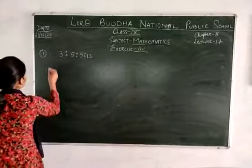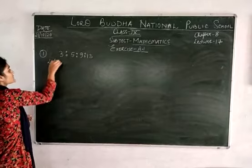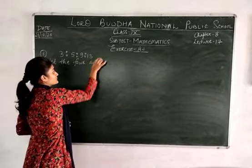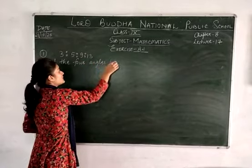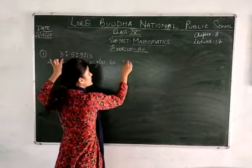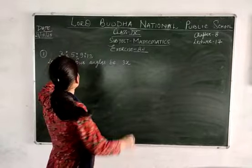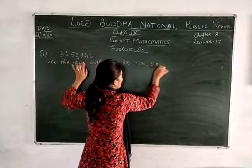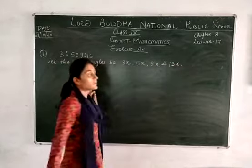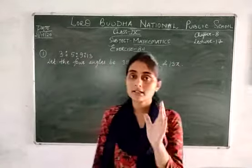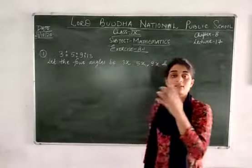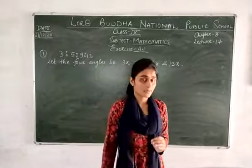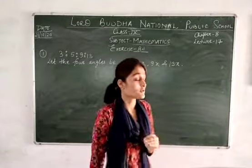The very first thing we are going to do is let the four angles of the quadrilateral be 3x, 5x, 9x, and 13x. Now, by the angle sum property of quadrilaterals, we need some relation between them so that we can find the value of x.